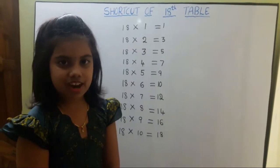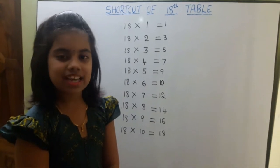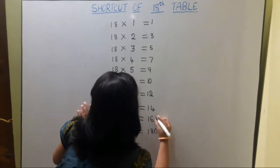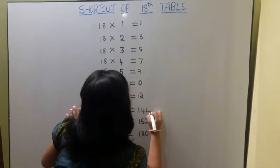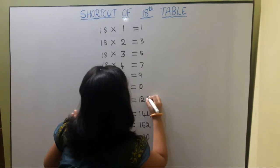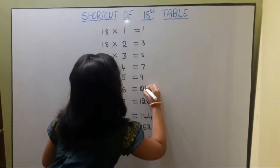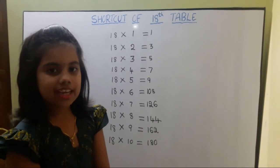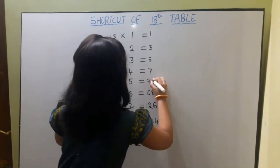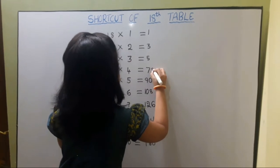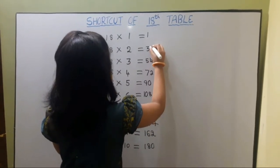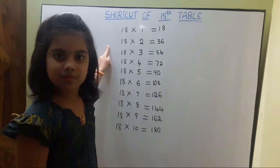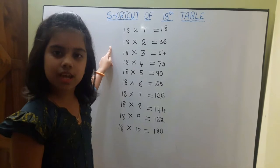Then we should write down to up 0 to 8 even numbers. Again we should write down to up 0 to 8 even numbers. So this is the shortcut of the 18th table.